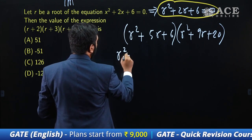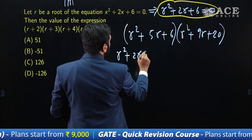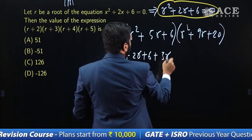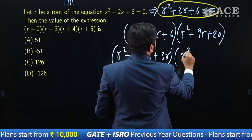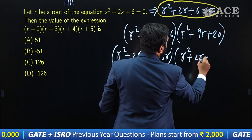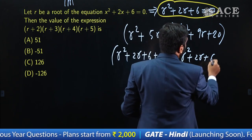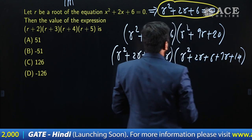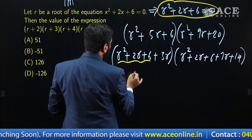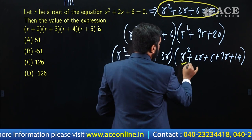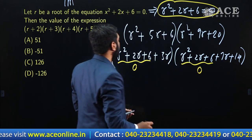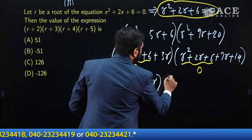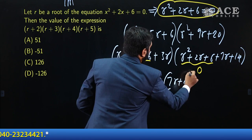So it's (r² + 2r + 6) + 3r left here. In the same way I write the second expression: (r² + 2r + 6) + 7r + 14. Now I highlight these parts. Instead of r² + 2r + 6, you can substitute 0. So what's left is 3r and 7r + 14.